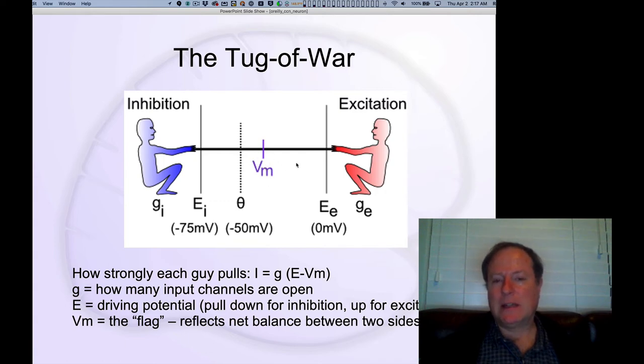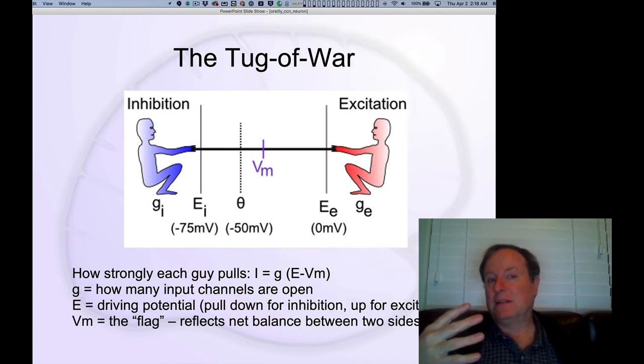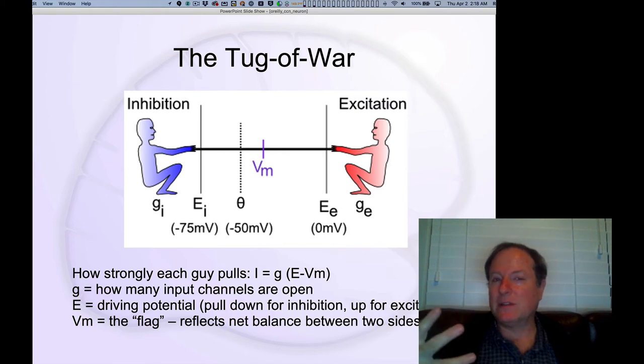That membrane potential is getting pulled up and down based on the strength of inhibitory current or excitatory current. And the current is represented by these factors G, which actually mean conductance. And so formally what we're talking about is how open are the channels that allow excitatory ions to enter the neuron versus inhibitory ions to enter the neuron. And that's what we mean by conductance. Conductance is also just the inverse of resistance.